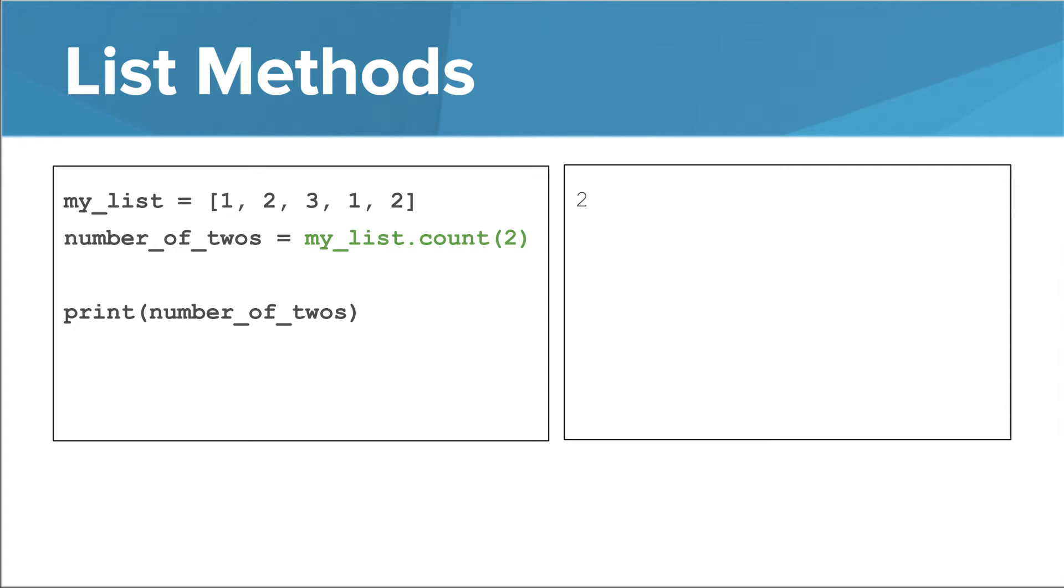Like the string methods you learned, this method does not have side effects. Basically, that means that my list is unaffected. This actually isn't true for other methods I'm about to show you. It's actually possible to change a list by calling a method on it. Let me show you an example.